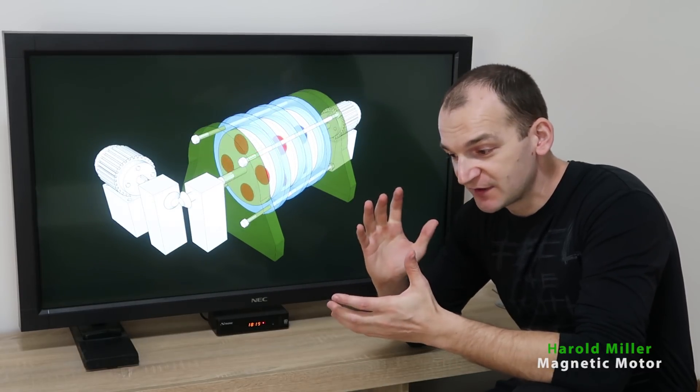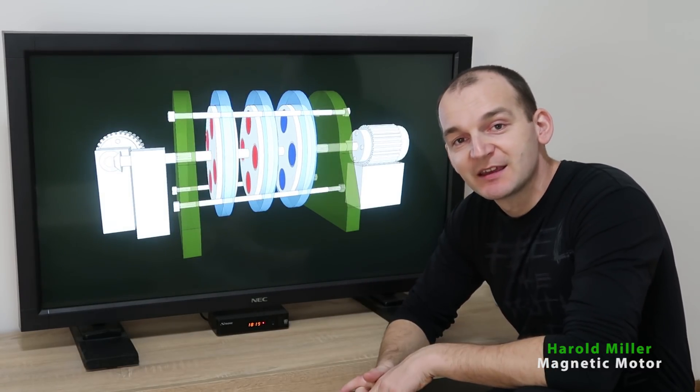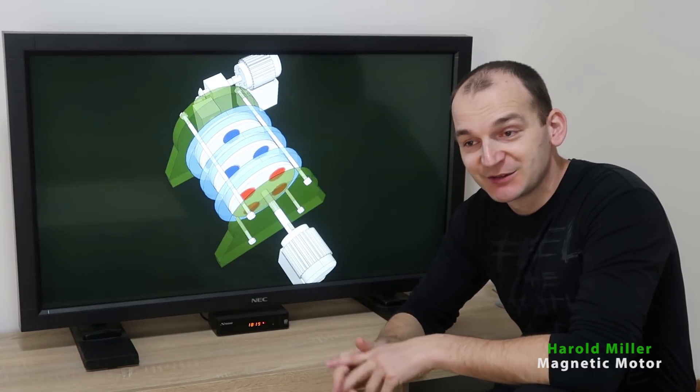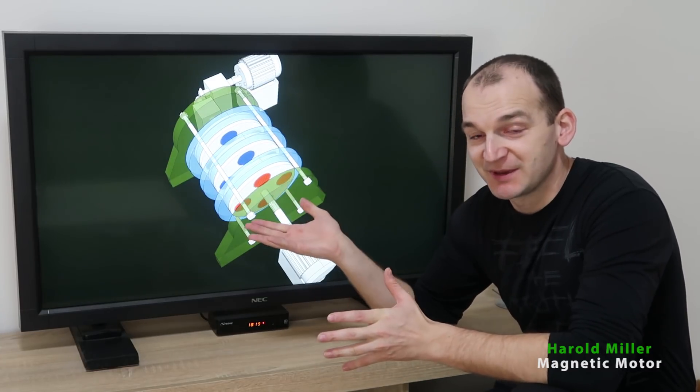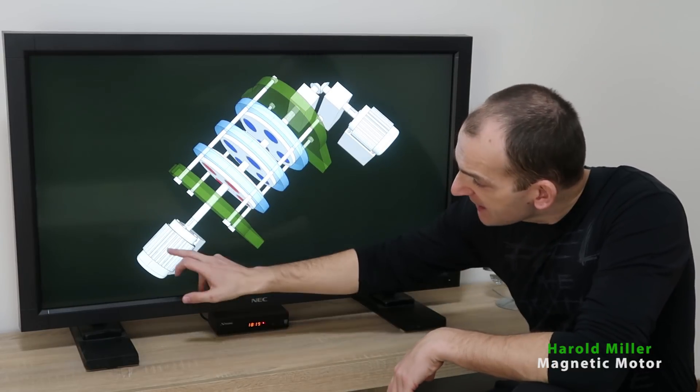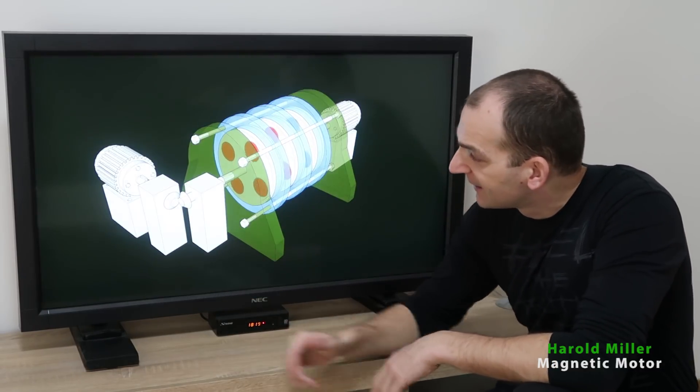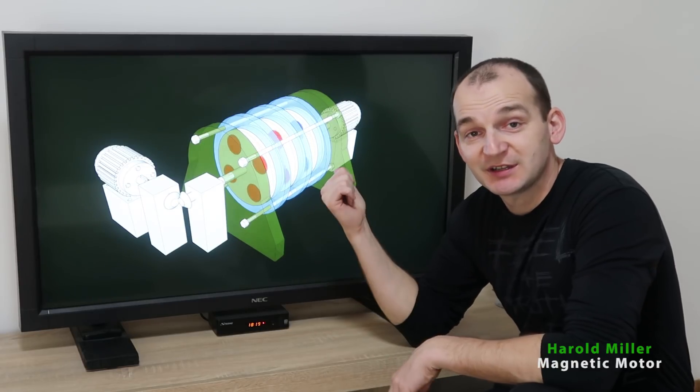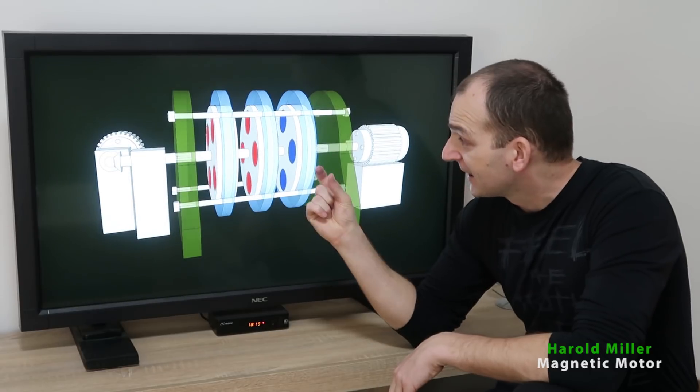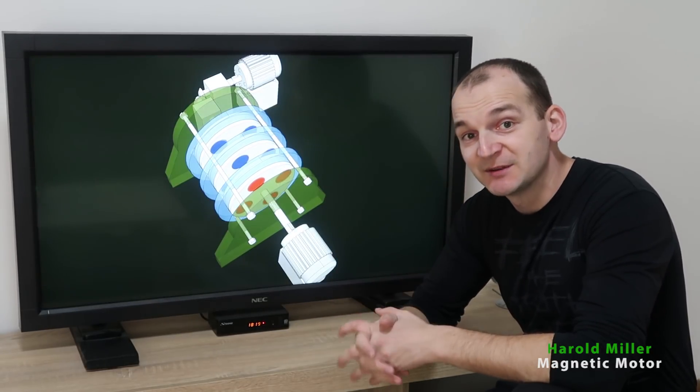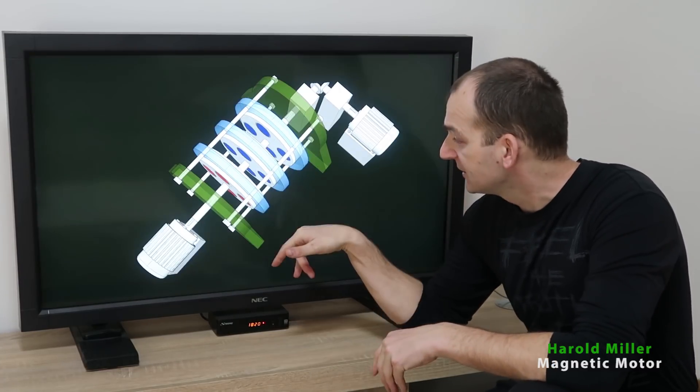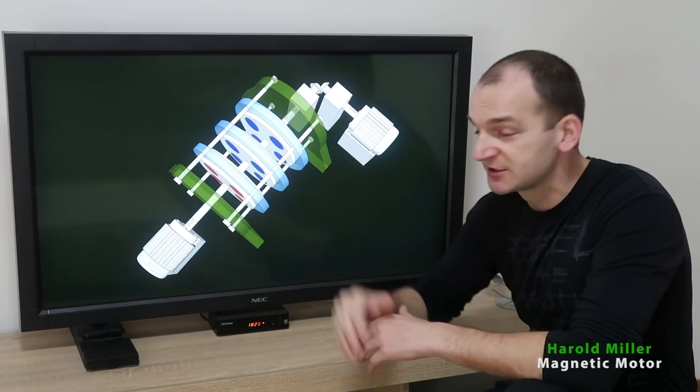Otherwise this would never work. But as you can see we have some kind of input motors which is needed to spin this at least just momentarily. And then these forces between the magnets are created and then it moves much forward. But we need the input motor to spin this up.